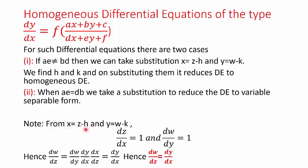Before solving questions, let us note something. We have taken the substitution x = z − h and y = w − k. Differentiating z with respect to x gives dz/dx = 1, and differentiating w with respect to y gives dw/dy = 1. Now, dw/dz can be written as (dw/dy)·(dy/dx)·(dx/dz). Since dw/dy = 1 and dx/dz = 1, we get dw/dz = dy/dx. This is something we will be frequently using in our examples.